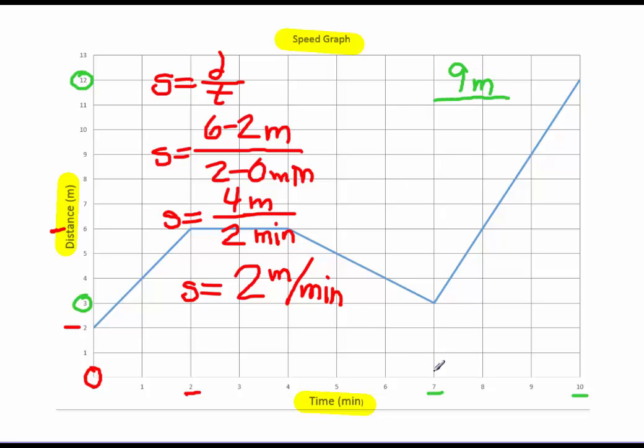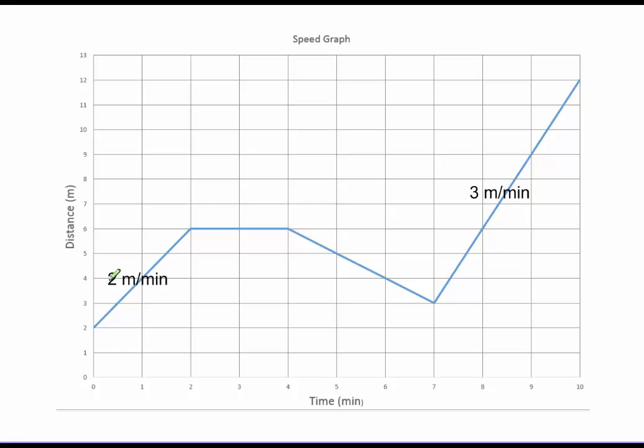And the change in time, ten minus seven, is three minutes. So the speed is equal to nine divided by three. So here, you'll see that the speed is three meters per minute. So if we look at that, two meters per minute, and look at how slanted this line is.